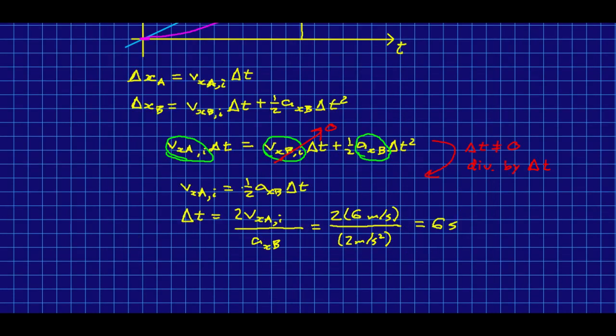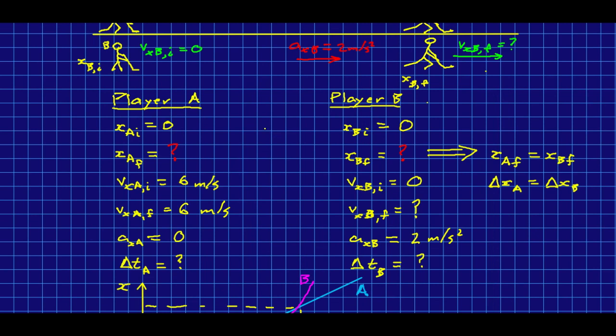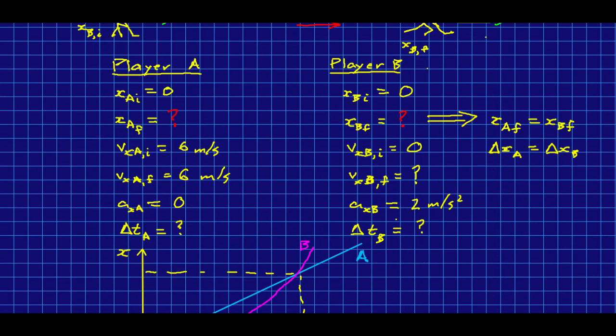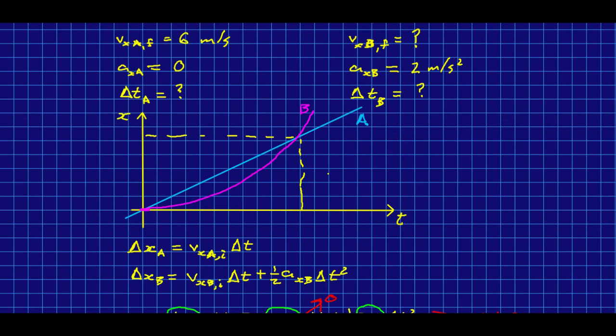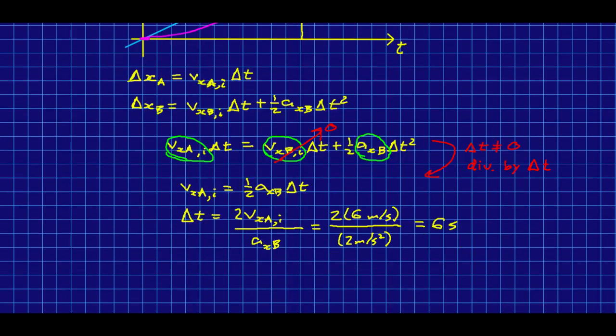And it's worth assessing this. Note that after three seconds with this acceleration, player B would have been going at the same speed as player A. But they can't possibly have caught up to them yet, because they were going slower than player A the whole time. But that's when they match speeds. And so it's after that that they start to catch up. So we knew the answer had to be more than three seconds, and it turns out to be six.